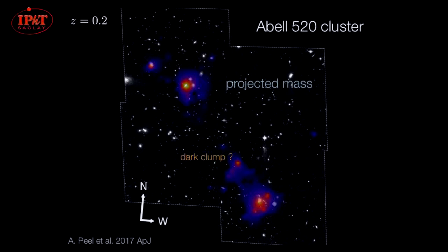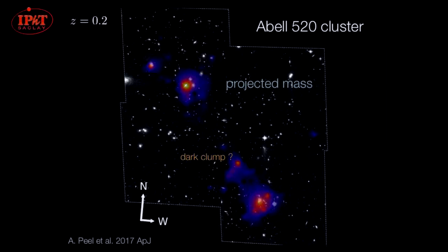I'll just jump right in and show you the thing I'm going to be talking about. This is the ABL 520 cluster — it's a merging cluster system at redshift 0.2 — and we're seeing it now after the two main initial cluster components have passed through each other. What we're looking at in color here is our mass reconstruction, 2D projected on the sky over the black and white star field. We computed this mass map using the source galaxies in the background of this lens, which is the cluster.